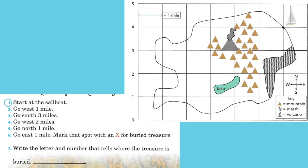Let's look at number one. It says start at the sailboat. There's the sailboat. Go west one mile. Now west is going to be to the left. There's one mile.